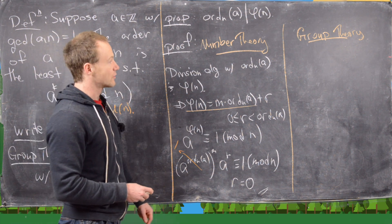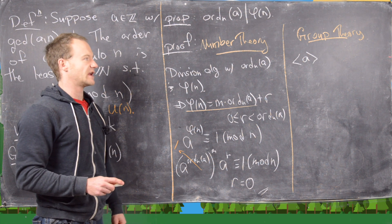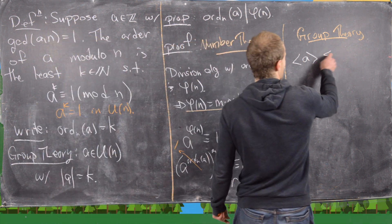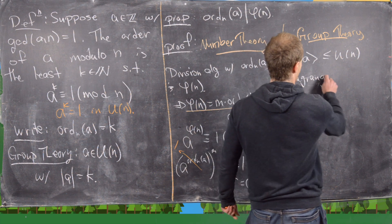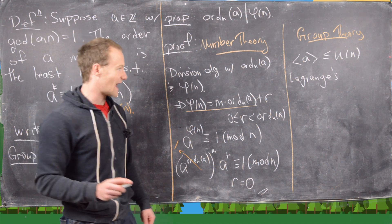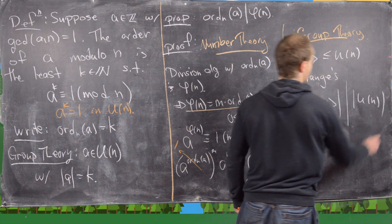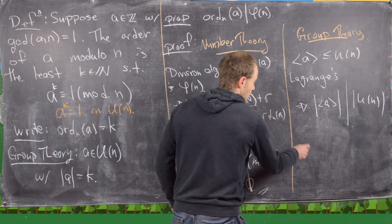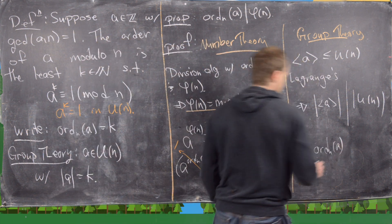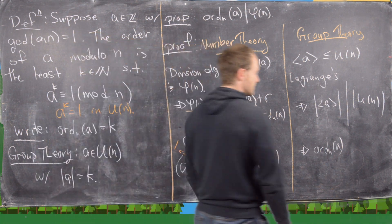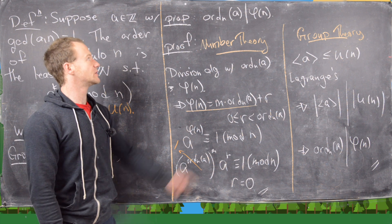In the group theory setting, we consider the cyclic subgroup generated by a inside the group of units. By Lagrange's theorem, the order of a subgroup always divides the order of the group. The order of this cyclic subgroup equals the order of its generator, which is exactly the order of a with respect to n, and the order of the group of units is phi of n. So we get two nice proofs of this proposition.